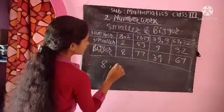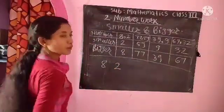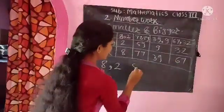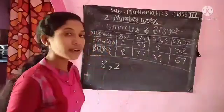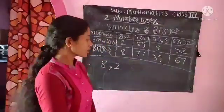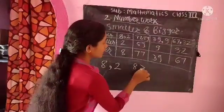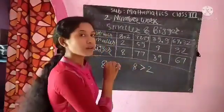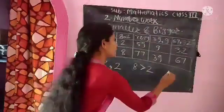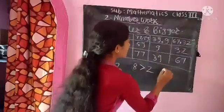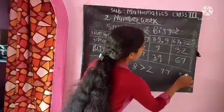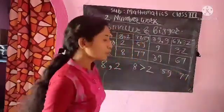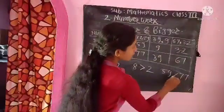Now we complete this table. Here, 8 is the bigger number — 8 is greater than 2. If a number is bigger, then we give this symbol. If we have 77 and 59, then the bigger number 77 gets this symbol.